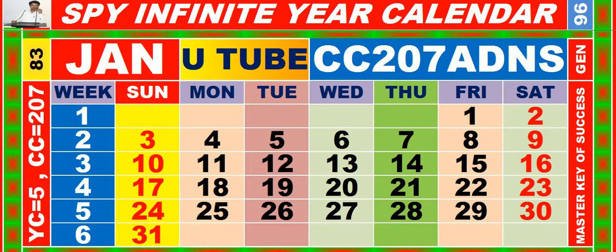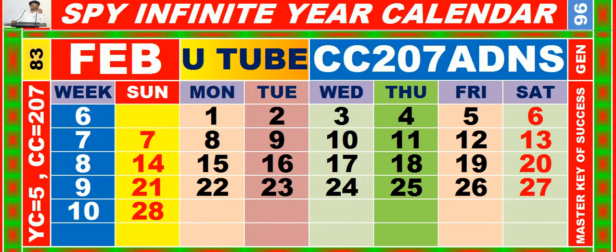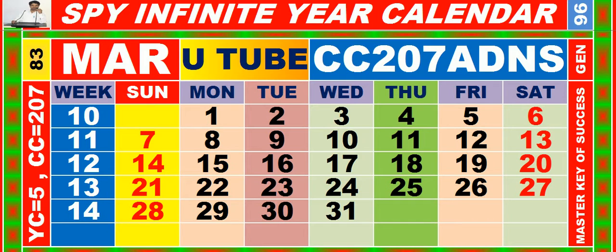Calendar for the month of January, having calendar code equal to 207. Calendar for the month of February, having calendar code equal to 207. Calendar for the month of March, having calendar code equal to 207.